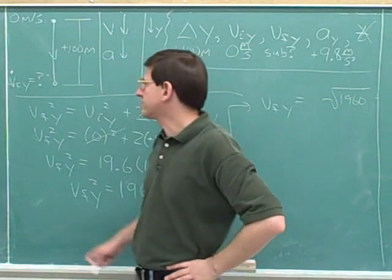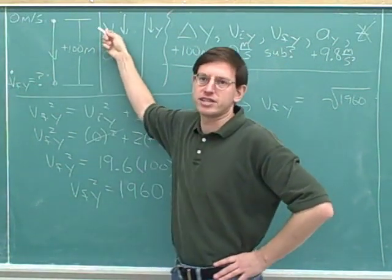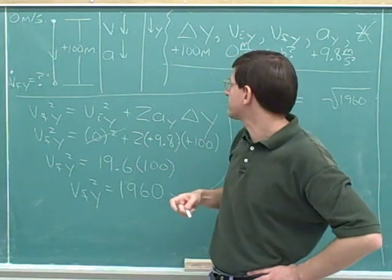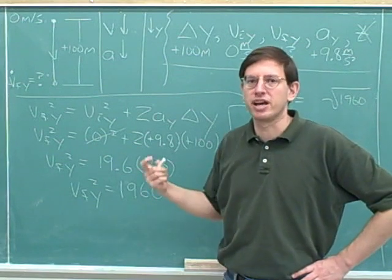Well, we know that we want to know the velocity the instant before we hit the ground. We know that's going to be a downward velocity. And since we chose down to be our positive direction, we know that the velocity should come out to be positive.